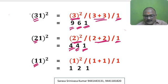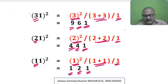11 square: 10th digit is 1. I write 1 square, 1 plus 1, 1 — here 1; 1 plus 1 is 2; 1 square is 1. So 11 square is equal to 121.